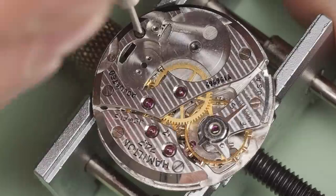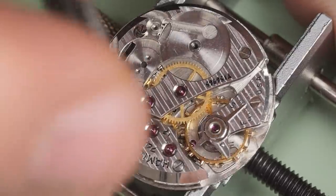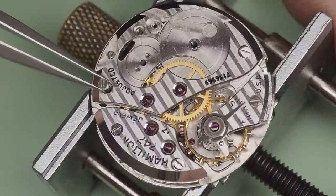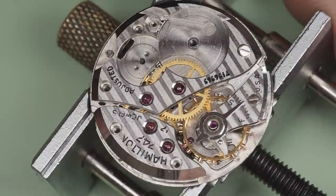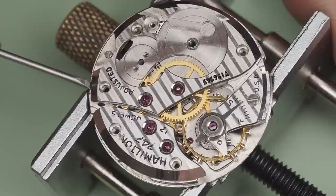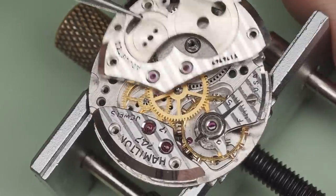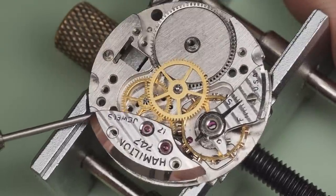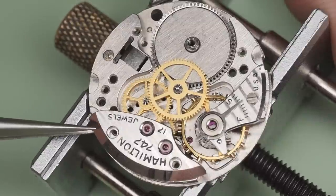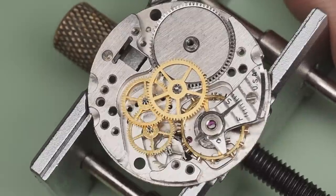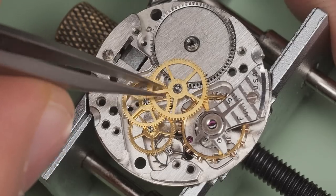With all of those components stripped from the movement, I can now start taking the bridges off. As with most movements, all five bridge screws are the same so I won't need to worry about that when it comes to reassembly. The barrel bridge is first to come off. There are specific points on the bridge where a screw can be inserted to pry it up. The same is true for the train bridge. You'll notice that the train bridge only has pivot holes for the escape and fourth wheel.